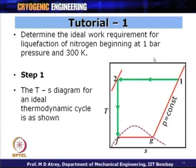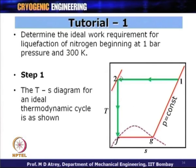The first step is to get a T-S diagram for the ideal thermodynamic cycle. This T-S diagram for nitrogen is available in various books and online. Once I know point 1, I locate point F at the constant pressure line. I draw a horizontal line from 1 to 2 and a vertical line down to locate point F.